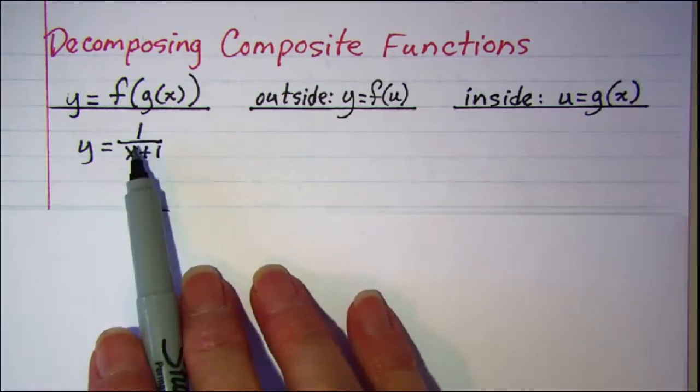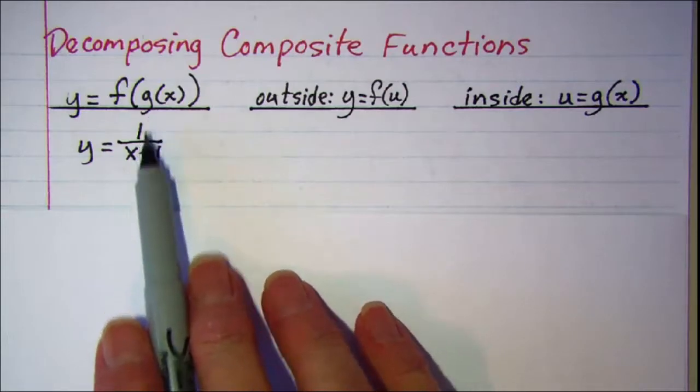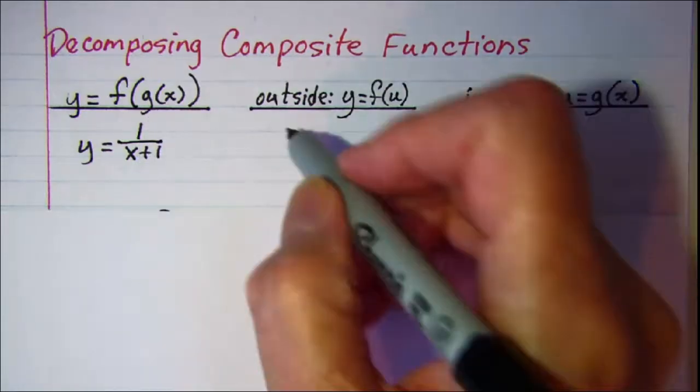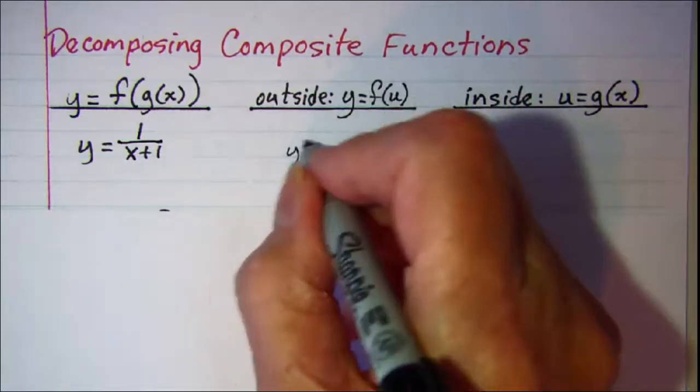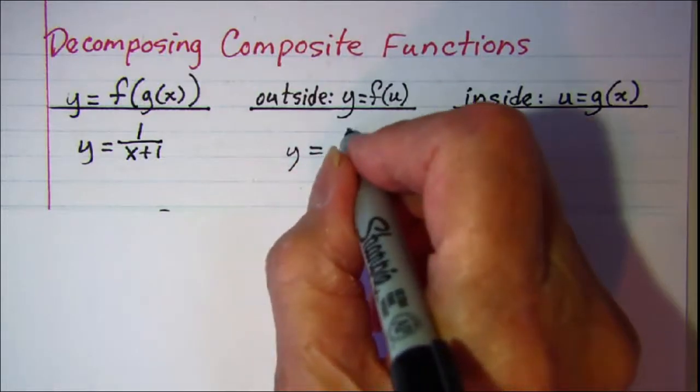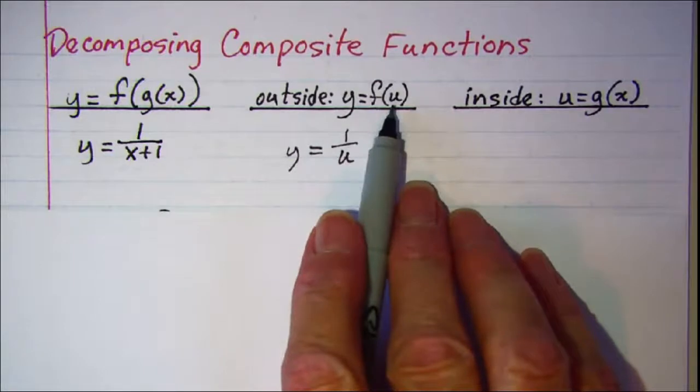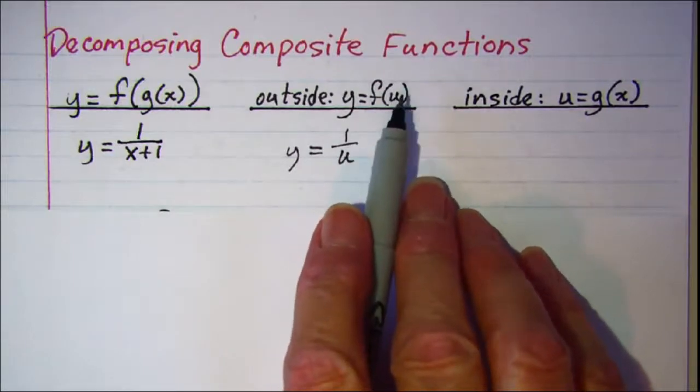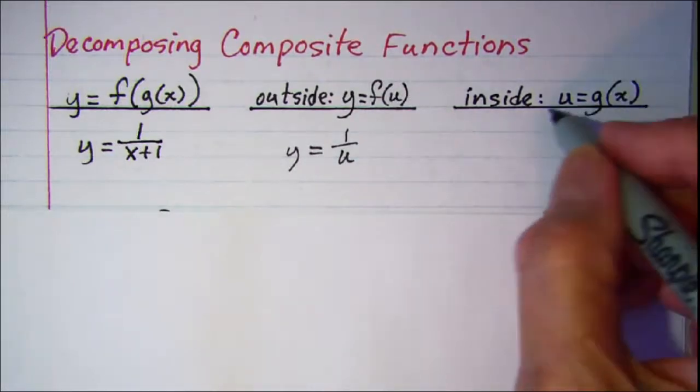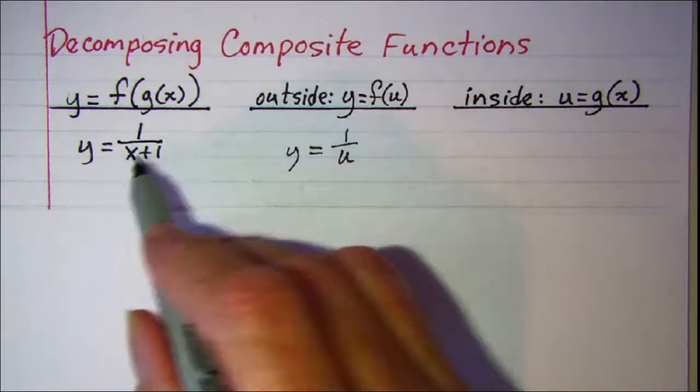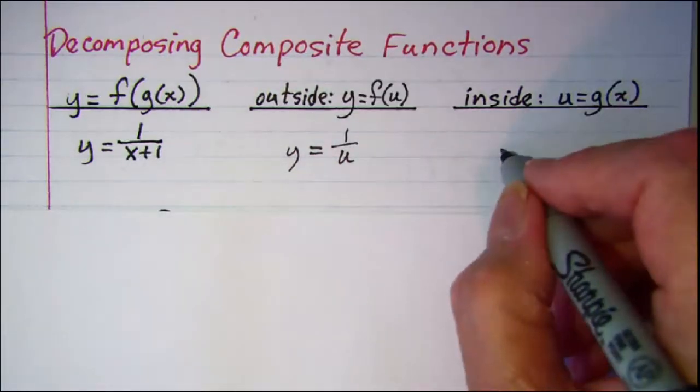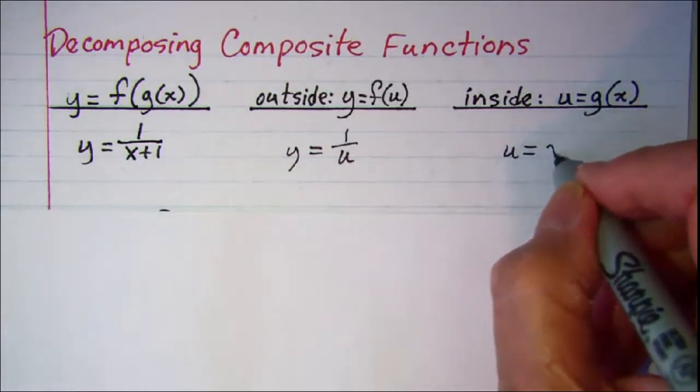So for this one we have one over something, so this outside part we would write as y equals one over that something, since we're having that shown as f of u. Our inside part then is the something, so we have u is equal to x plus one.